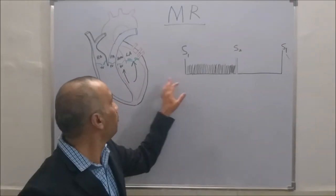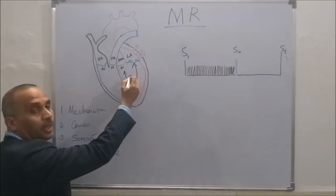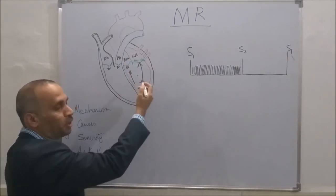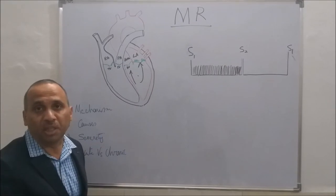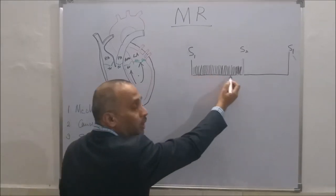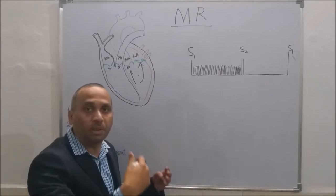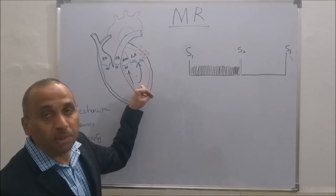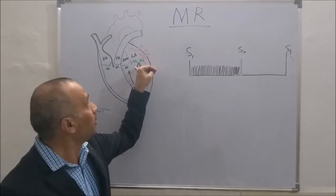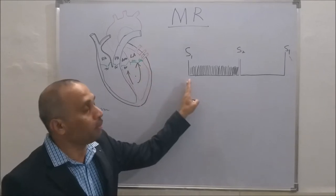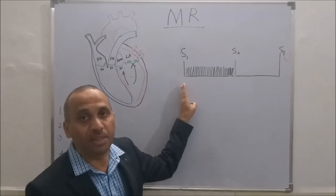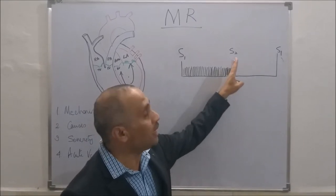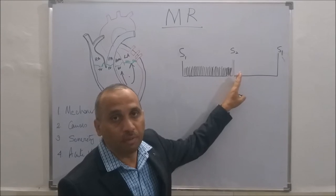Why is it pan-systolic? If you see the pressure difference between the LV and the LA — LA pressure is around 10 mmHg, LV pressure in systole is around 120 mmHg. So there is a pressure gradient throughout systole. During the entire phase of cardiac systole, the blood goes back from the LV to the LA because of the valvular dysfunction. So the murmur in mitral regurgitation is a pan-systolic murmur and it ends with the closure of the valve.